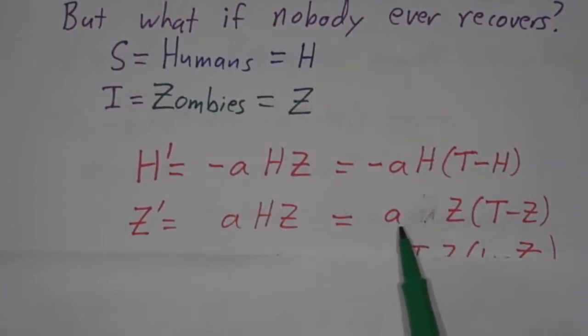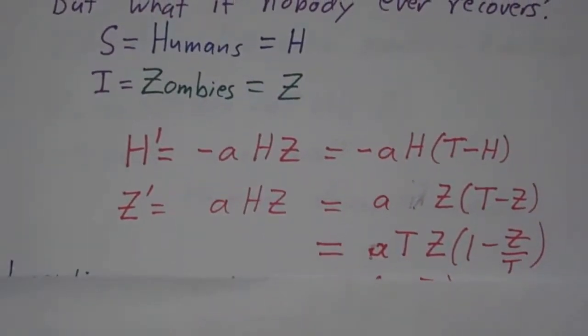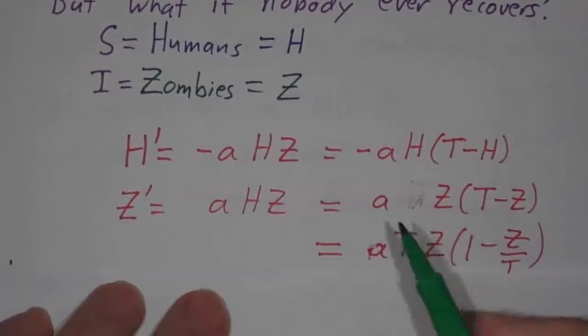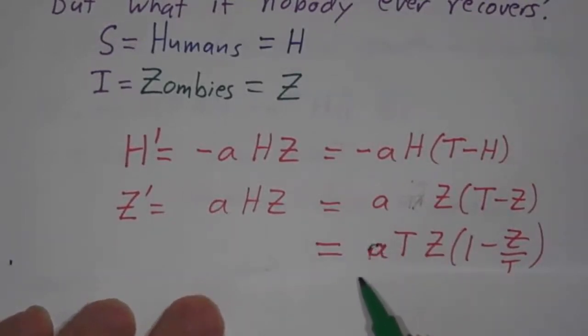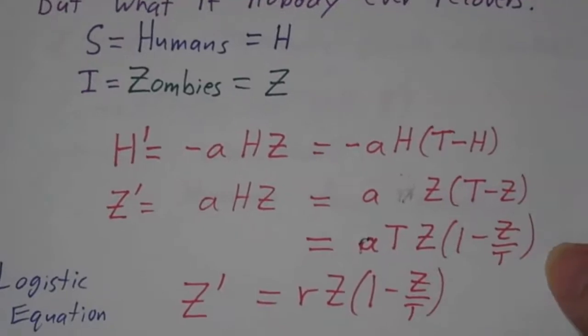You can write that in terms of the number of zombies: A times Z times T minus Z. You can factor out the T, and define a new constant R, which is A times T. So the rate at which we get additional zombies is R times Z times 1 minus Z over T. And that's called the logistic equation.